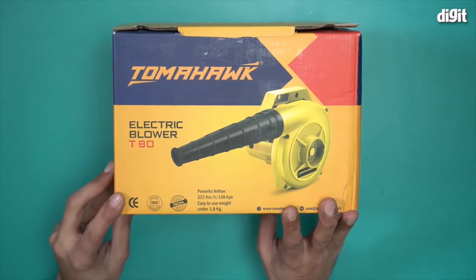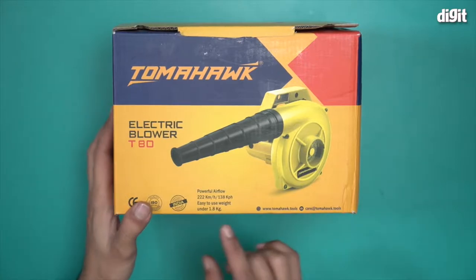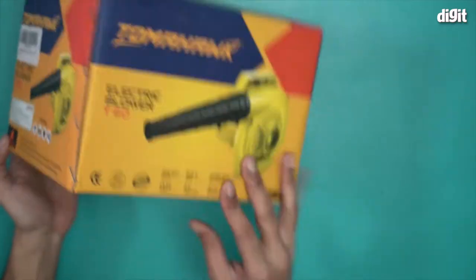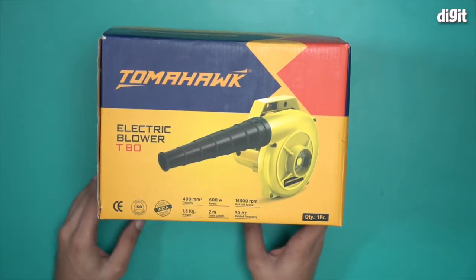This comes with 222 kilometers per hour of powerful airflow and weighs under 1.8 kilograms. The capacity is 400 millimeters square, power is 600 watts, it has 16,500 rpm speed, and a power cable length of two meters.